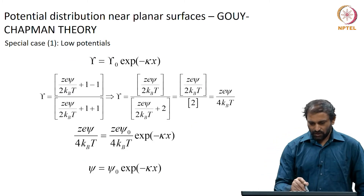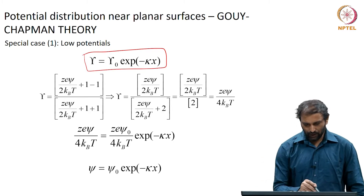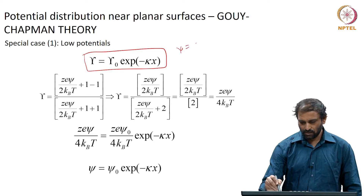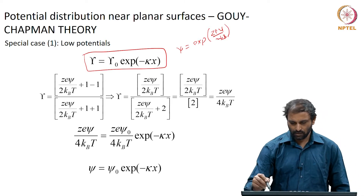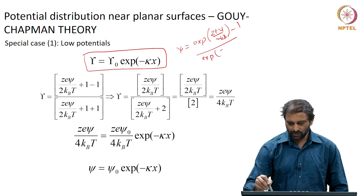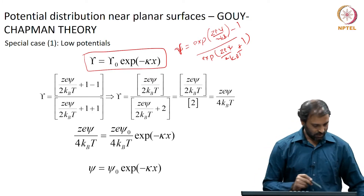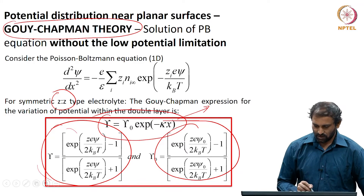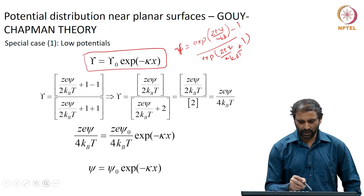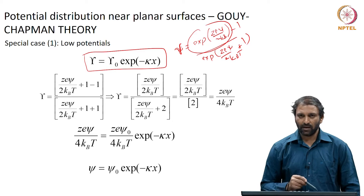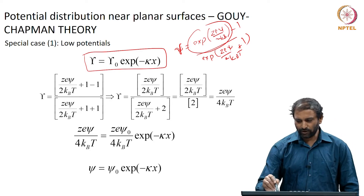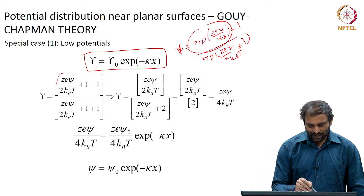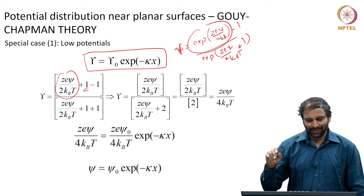Let us look at how we do that. The Gouy-Chapman solution gives gamma as: exponent of (z e psi divided by 2 k_B T) minus 1, divided by exponent of (z e psi divided by 2 k_B T) plus 1. For the low potential case, the exponential term can be expanded and we can neglect higher order terms, writing exponent of (z e psi / 2 k_B T) as (z e psi / 2 k_B T) plus 1.